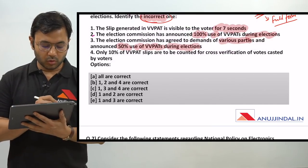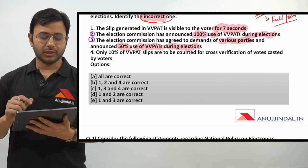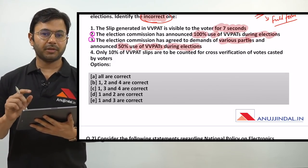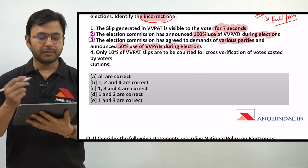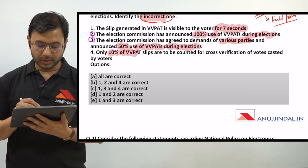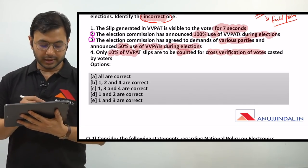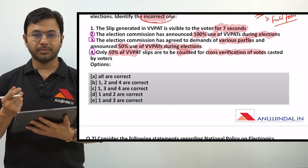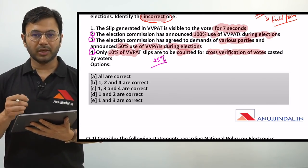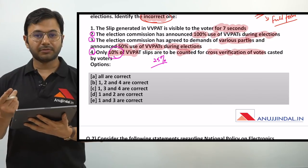The election commission has agreed to demands of various parties and announced 50% use of VVPATs during elections. So these two points - point number 2 and point number 3 - are totally in conflict with each other because point 2 says 100% use of VVPATs and point 3 says 50% use of VVPATs. Point 4 says only 10% of VVPAT slips are to be counted for cross-verification of votes cast by voters. There was a strong controversy regarding this. All political parties other than the BJP were demanding 25% counting of VVPAT slips, but the Supreme Court and the election commission allowed something else.